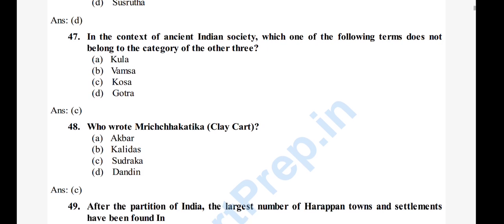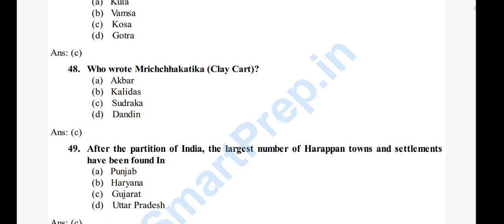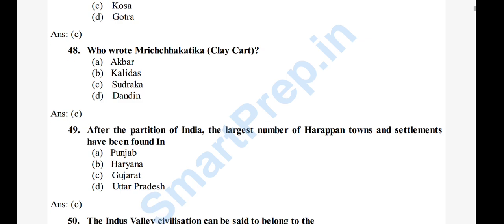Question 49: After the partition of India, the largest number of Harappan towns have been found in — A) Punjab, B) Gujarat, C) Uttar Pradesh. Most of the Harappan sites are now in Pakistan after partition. The right answer is option C, Gujarat — most of the largest Harappan towns are in Gujarat.